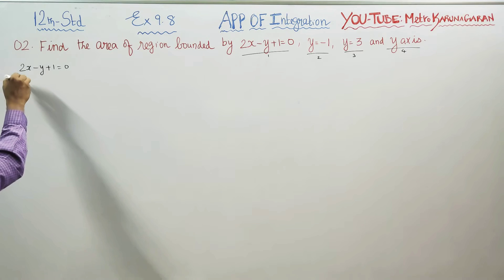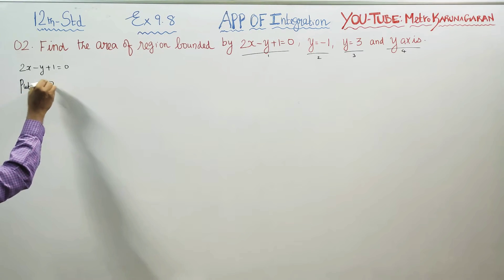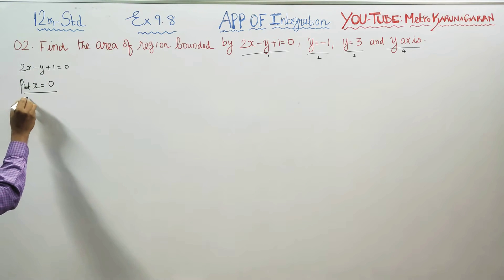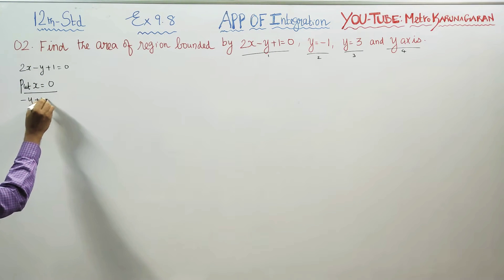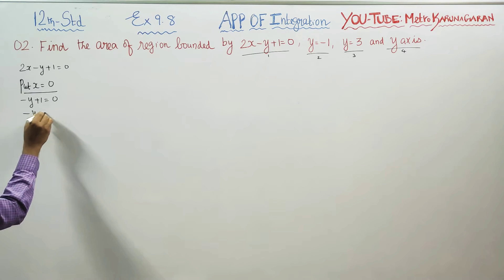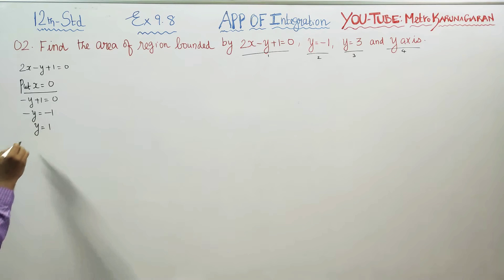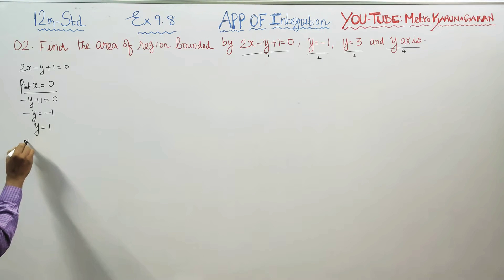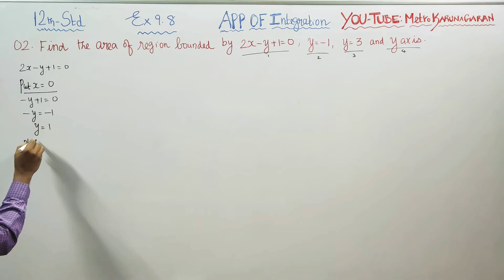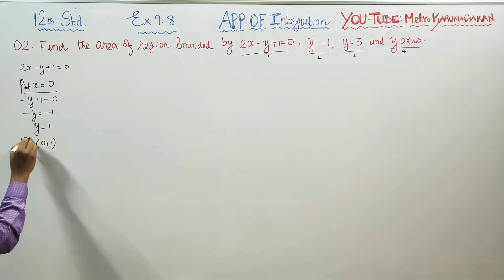Put x equal to 0: we get minus y plus 1 equal to 0, so minus y equals minus 1, therefore y equals 1. The first point for tracing the line is 0 comma 1.